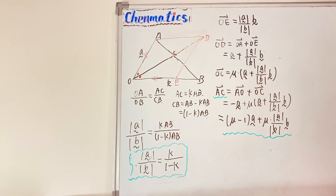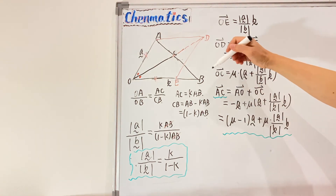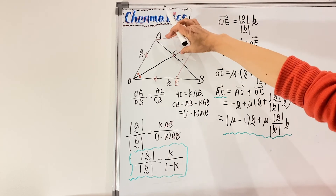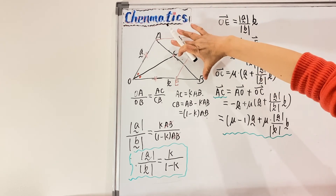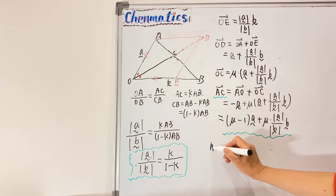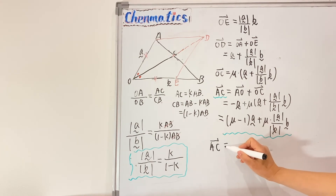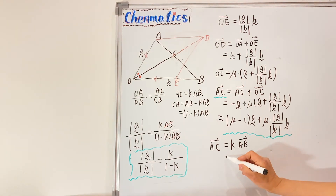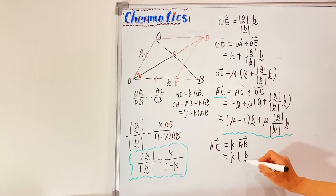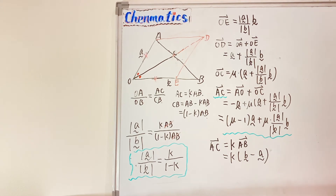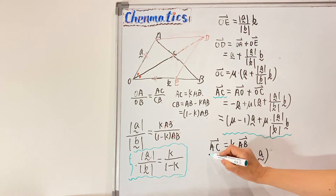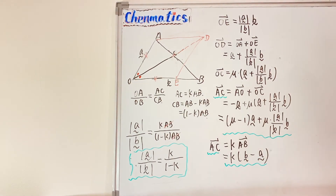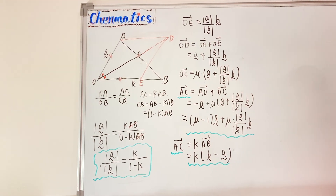From another point of view, we also know that AC is in the same direction as AB but with length K times the length of AB, so AC also equals K times the vector AB. And the vector AB equals vector B minus vector A, giving a second expression for AC equal to K·(B minus A).